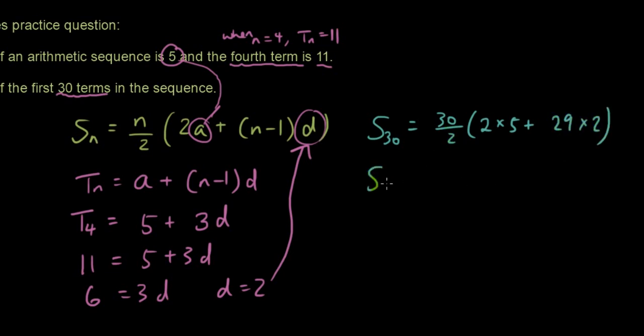You just have to type this into the calculator. 15 times 10 plus 29 times 2, so that's 58. Just type this in the calculator and you will get 1020. And that is the sum of the first 30 terms in this particular arithmetic sequence.